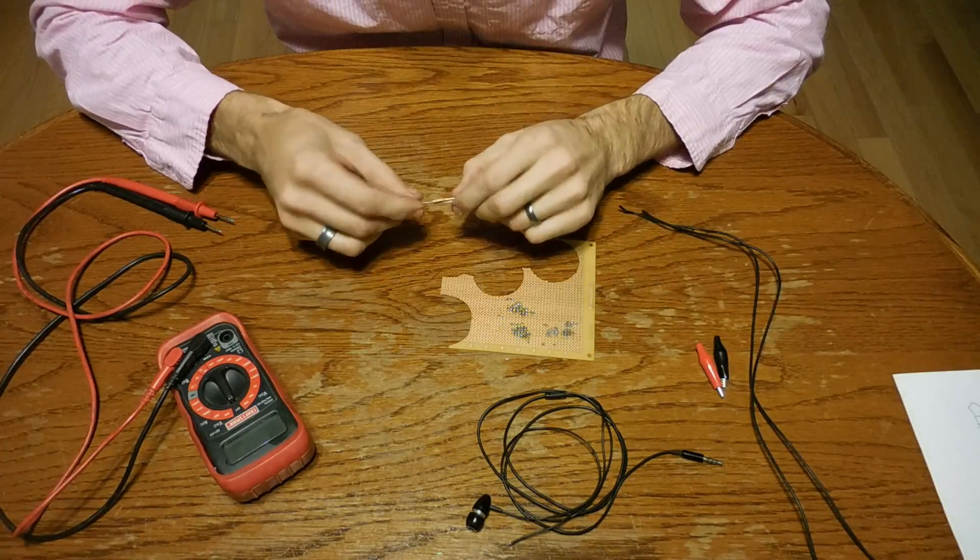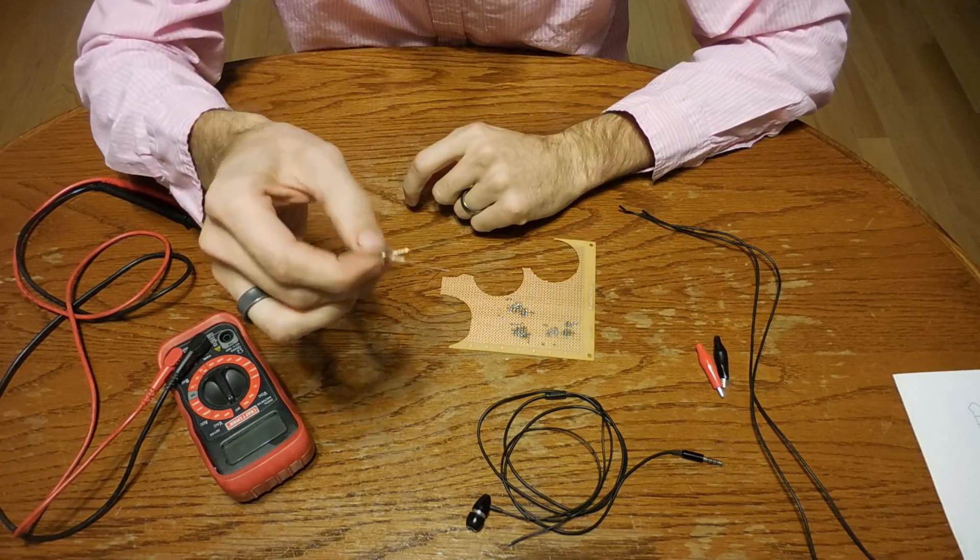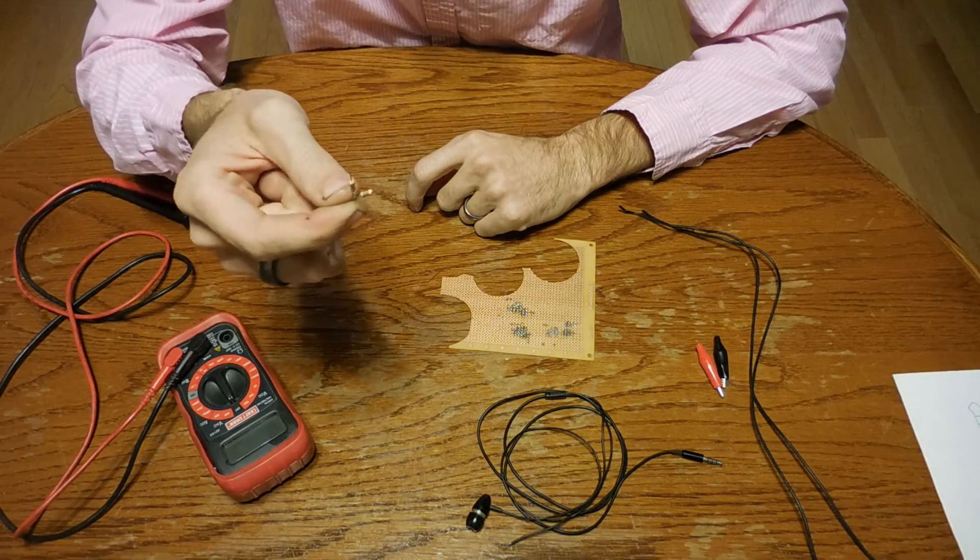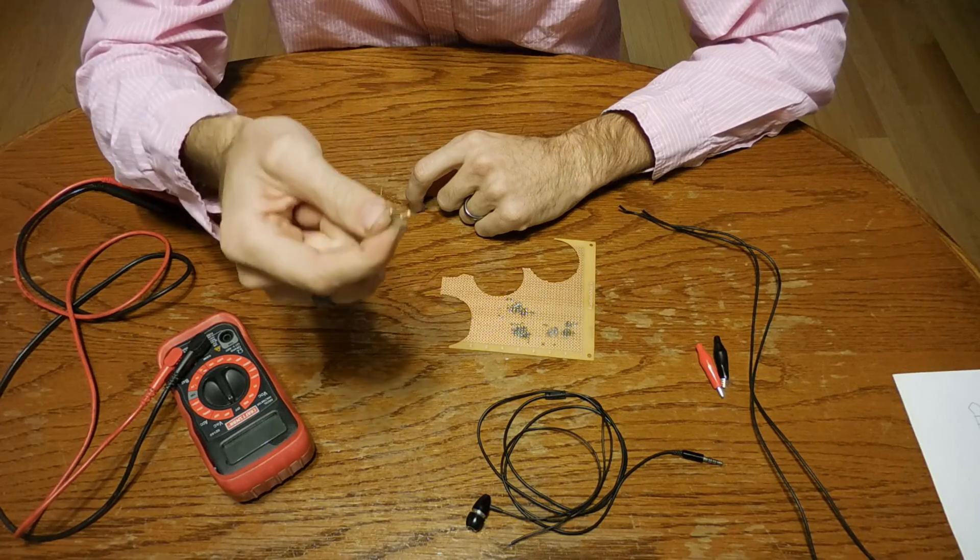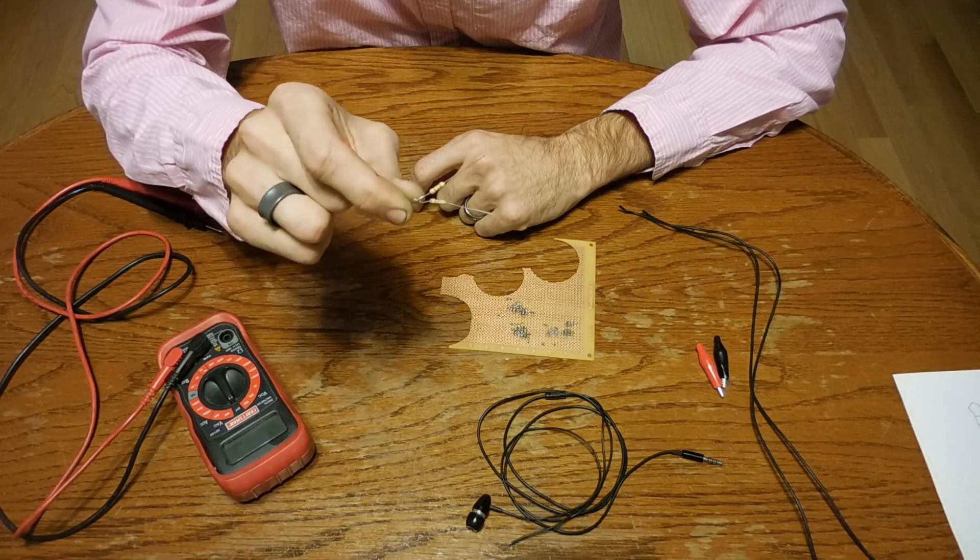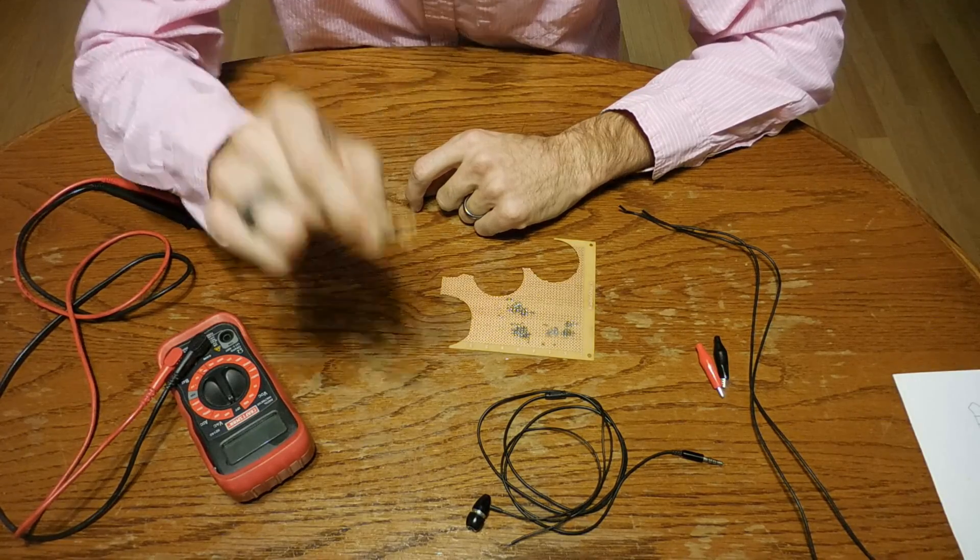So what you're going to need for this is a couple of resistors, and the resistors that you want need to be a 1 to 10 ratio. So you pick one resistor and then find another resistor that is 10 times as big, or 10 times the resistance of the first resistor.